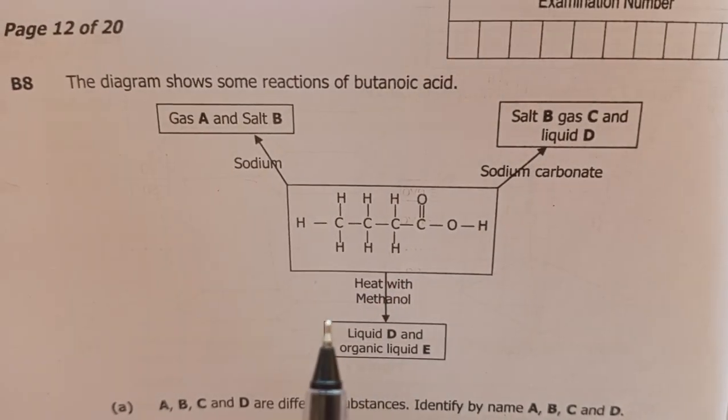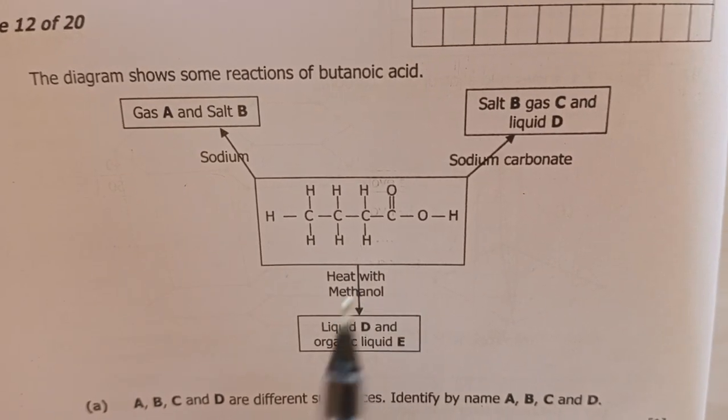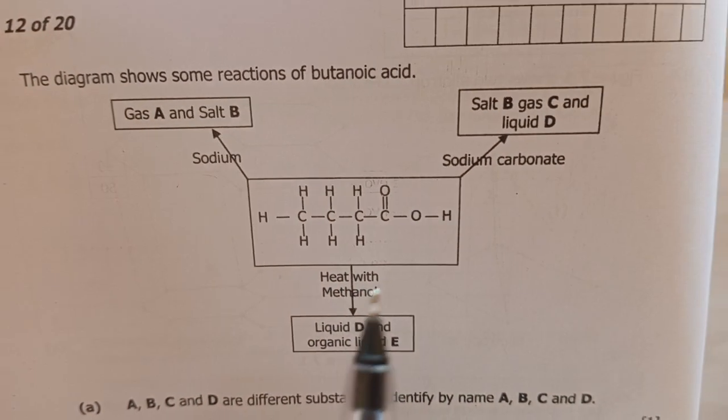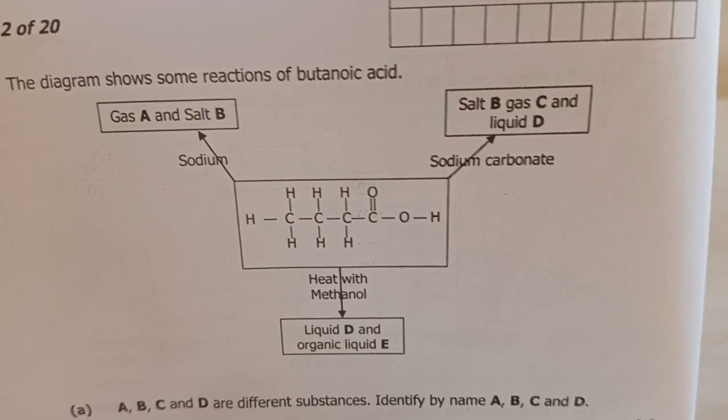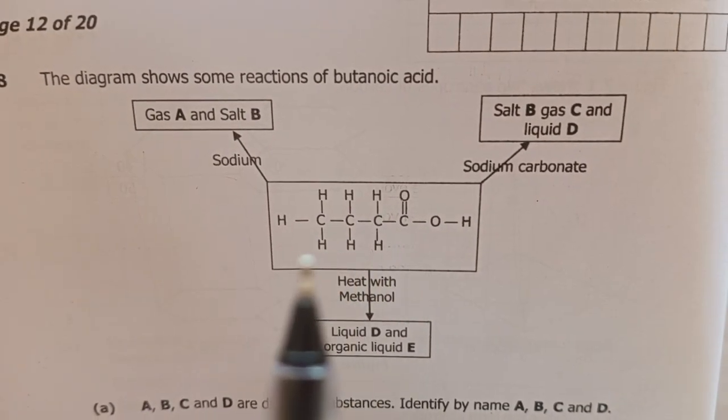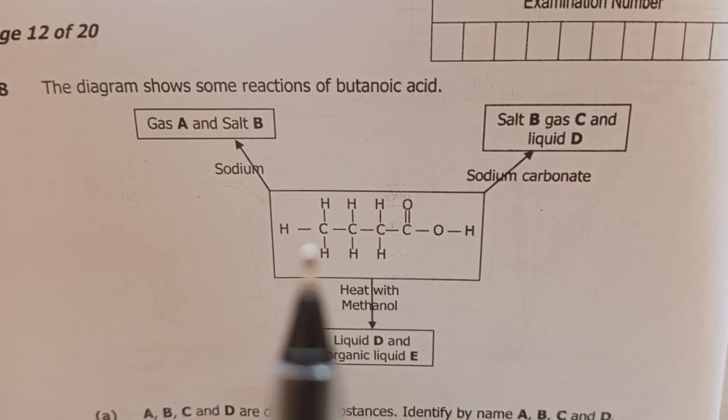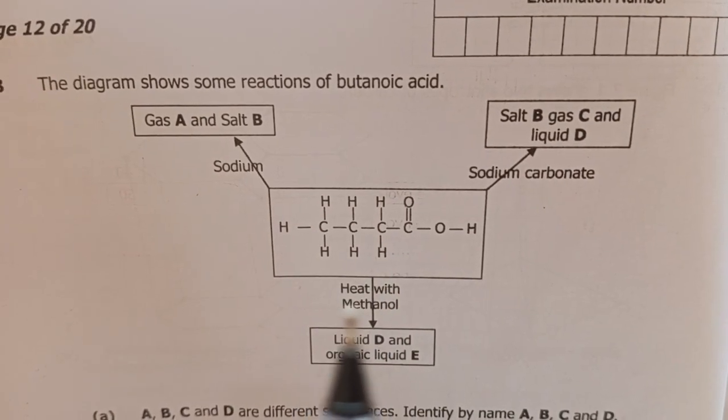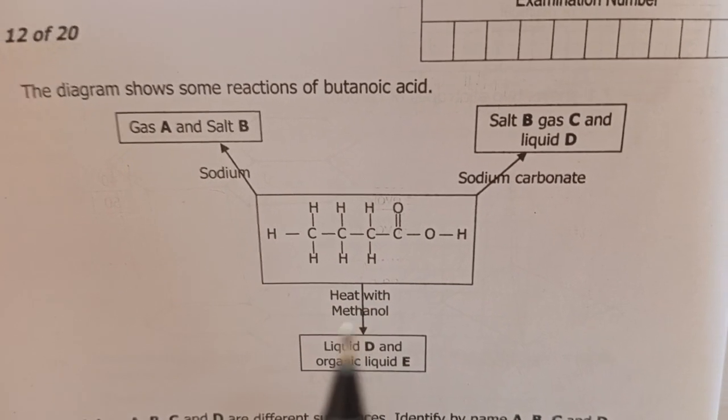We also see butanoic acid reacting with sodium carbonate giving three products: salt B, gas C, and liquid D. Then butanoic acid is heated with methanol, an alcohol, to give us liquid E, an organic liquid.